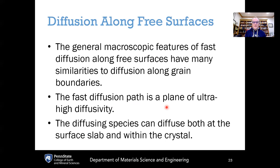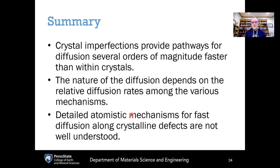Diffusion along free surfaces has many macroscopic similarities to grain boundary diffusion, since both involve planes of defects. But the free surface provides an ultra-fast diffusion pathway because there is no material on the other side. Atoms on a free surface are bonded to only one side, allowing them to migrate very quickly compared to atoms even along a grain boundary, due to the absence of matter on the other side. As a result, free surfaces provide the fastest pathway for diffusion to occur.